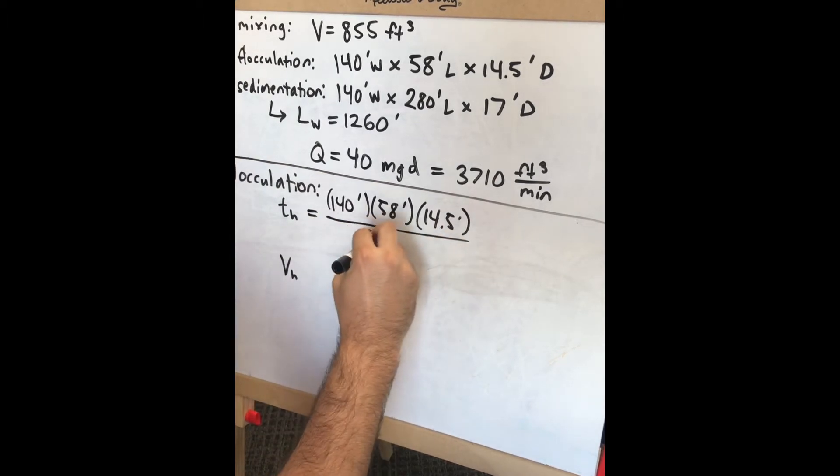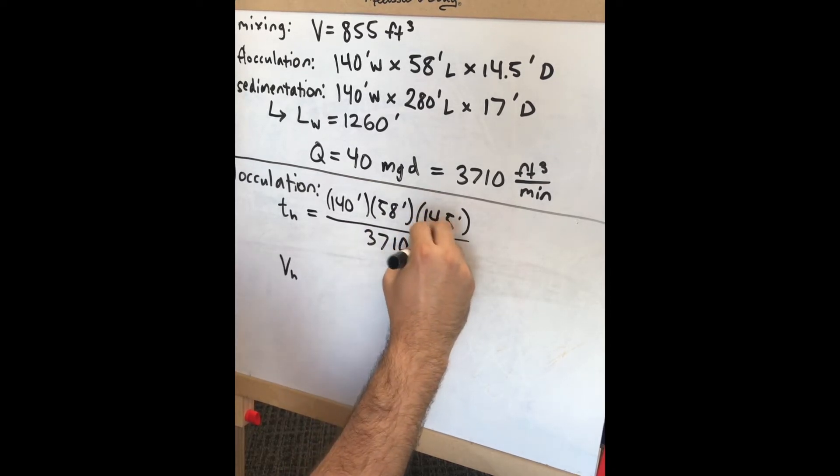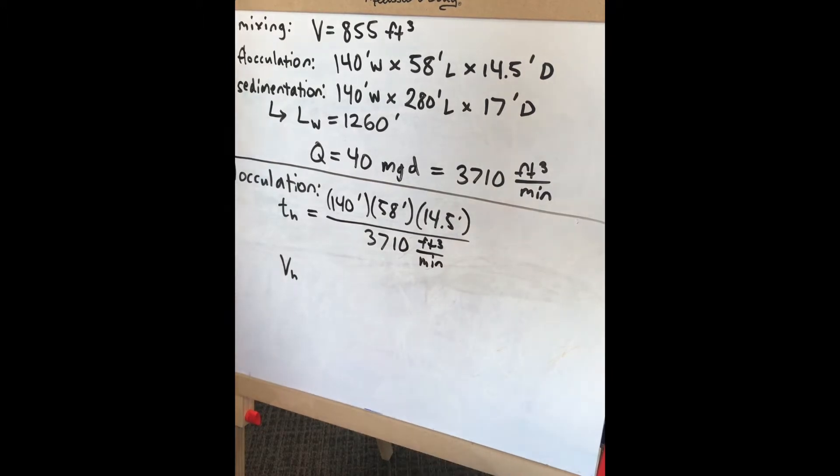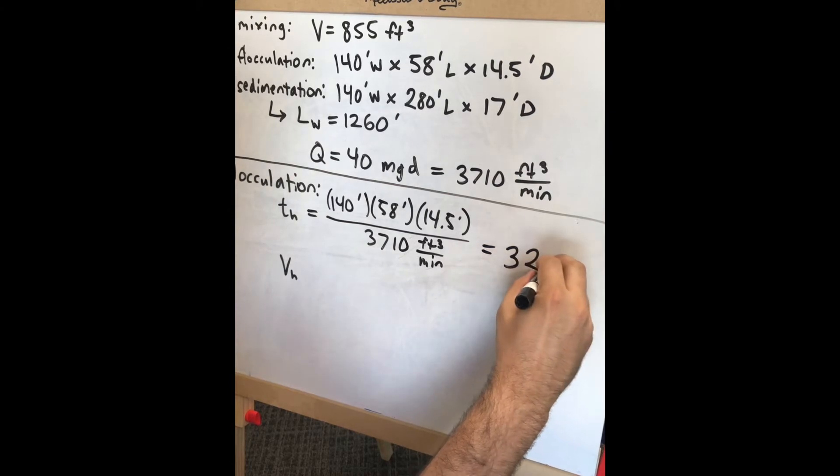Divided by 3710 cubic feet per minute, using the same equation as before, we get a value of 32 minutes.